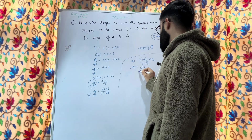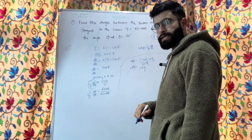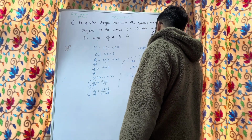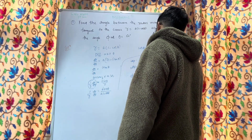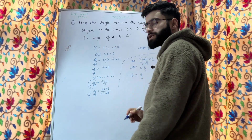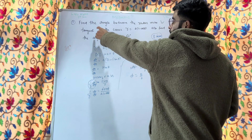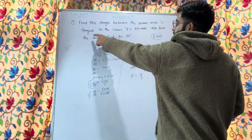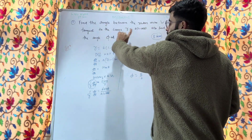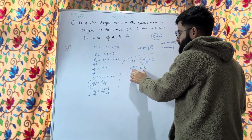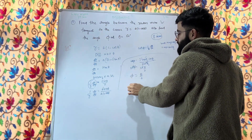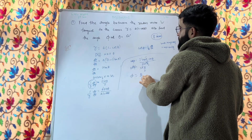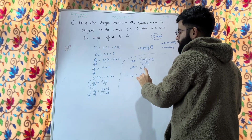Since cot φ = cot(θ/2), the cots cancel and we get φ = θ/2. This is the answer to the first part: the angle between the radius vector and the tangent to the curve r = a(1 − cosθ) is φ = θ/2.